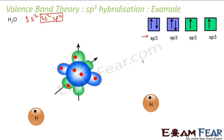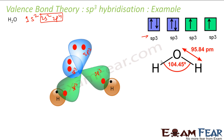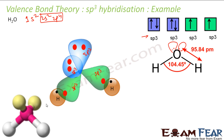After SP3 hybridization of oxygen, two of the four SP3 hybrid orbitals have two electrons each — these are lone pairs and won't go for overlapping. The other two SP3 hybrid orbitals each have one electron and will overlap with the S orbitals of the two hydrogen atoms to form two sigma bonds. So the structure of water has two bond pairs and two lone pairs. By VSEPR theory as well, this gives the same bent structure with two lone pairs and two bond pairs.